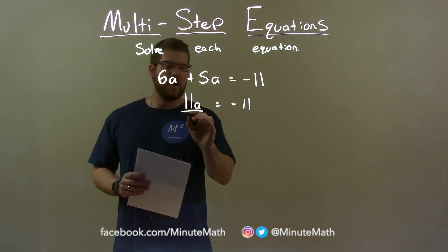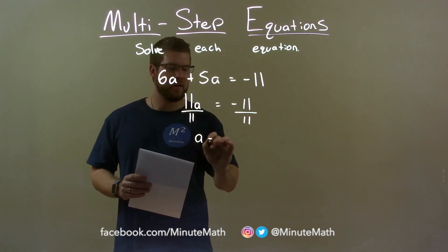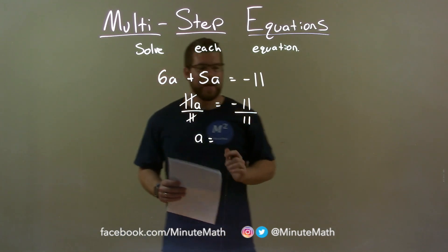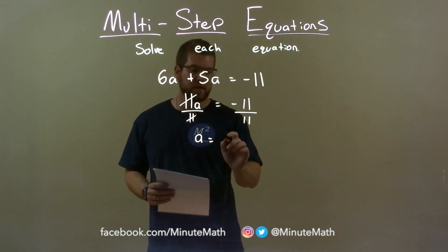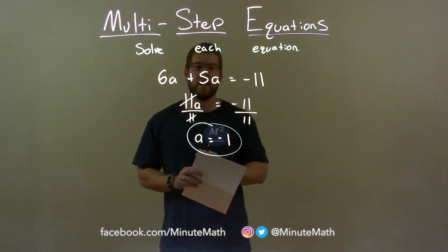Now I divide both sides by 11, giving me a by itself. The 11s cancel and negative 11 divided by 11 is negative 1, so our final answer here is just a equals negative 1.